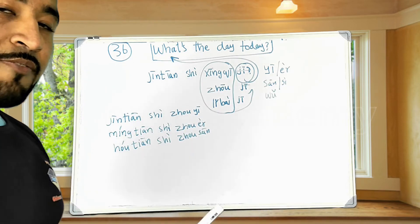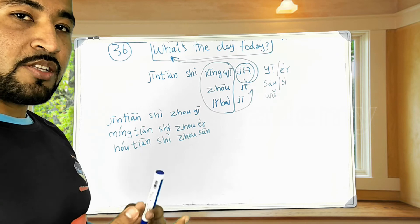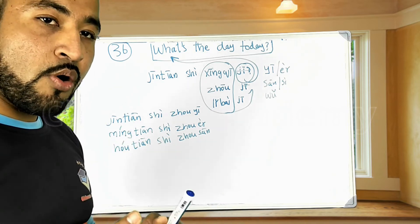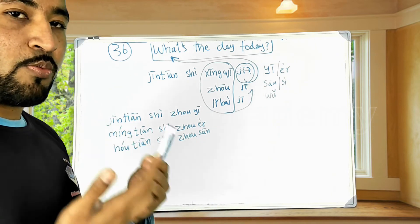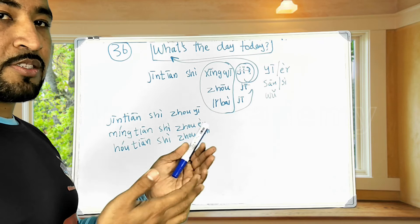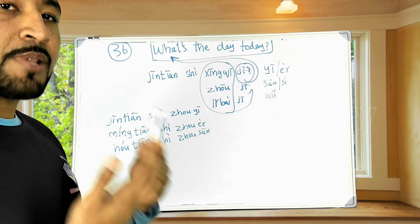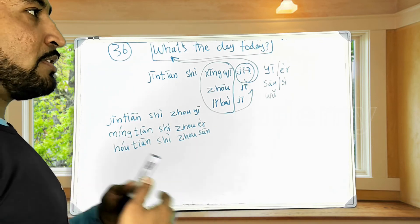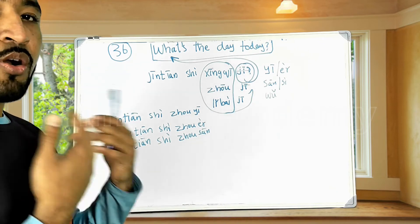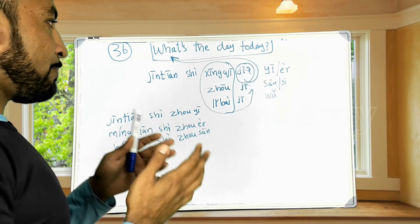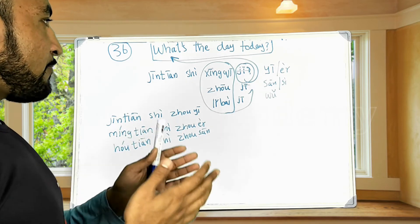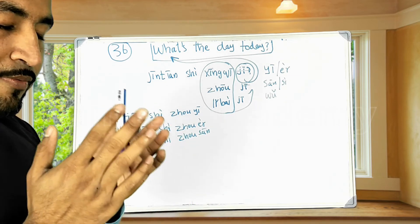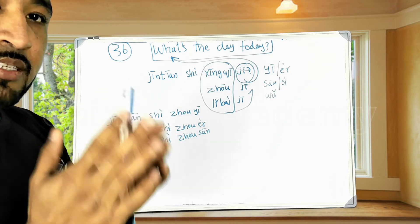So for example, answering this question 今天是星期几 — if it's the weekend, we can have different plans for the weekend. For example, if I want to go outside, if I have a plan to go outside for basking in the sun...